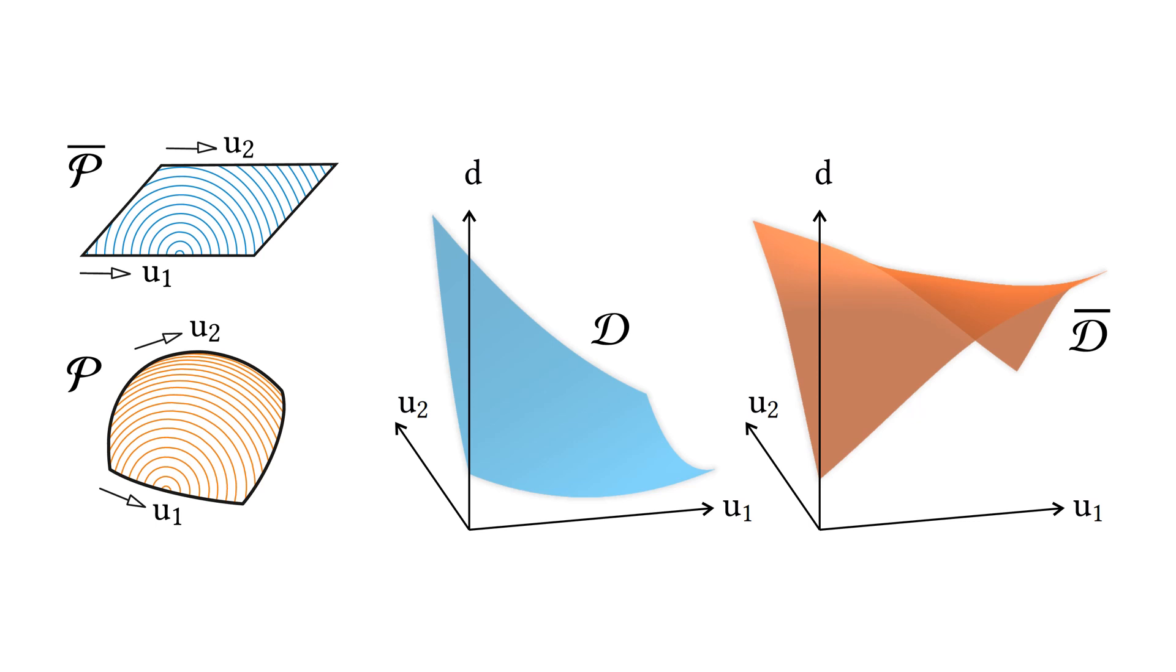To characterize the shape of the surface and the planar patch, we create distance maps, which are shown here on the right. Note that the shape of the blue distance map depends on the shape of the planar patch.